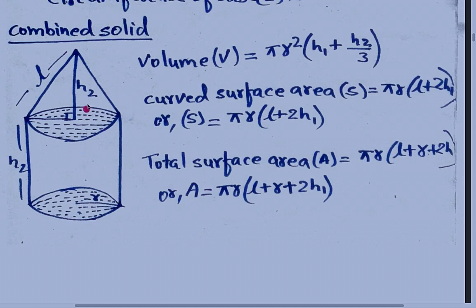In this figure, H, L, and R are given. R means the radius — the radius of the cylinder and the radius of the cone are both equal.